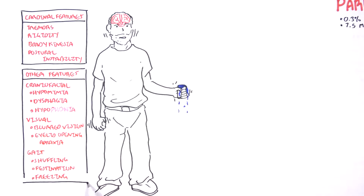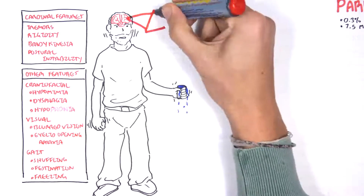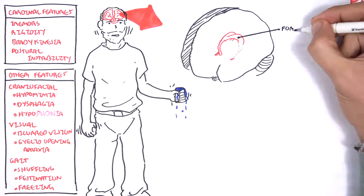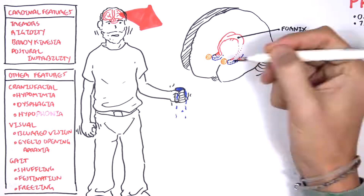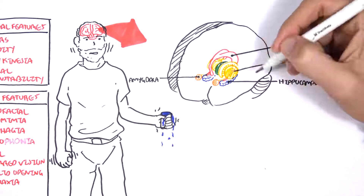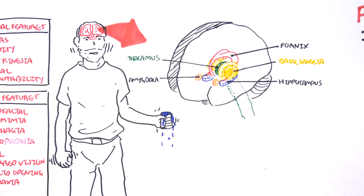All these signs and symptoms are a result of problems that occur within the brain, particularly in an area known as the basal ganglia. Here we have the fornix, an important part of the limbic system, the hippocampus for memory, and the amygdala for emotions. We will mainly concentrate on the basal ganglia, which is responsible for muscle tone as well as the ease of movement — helping in smooth and learned movement patterns.